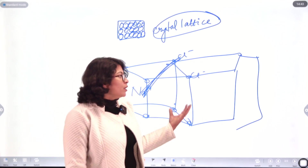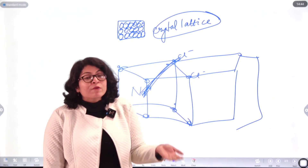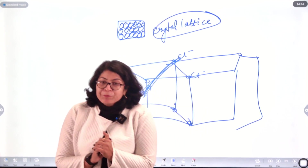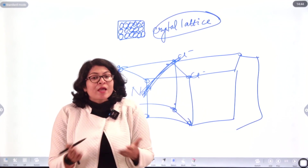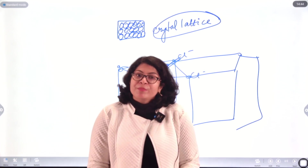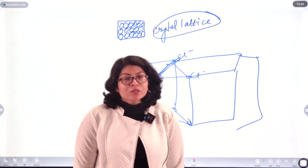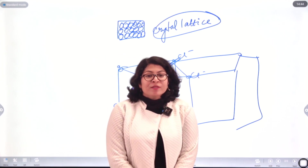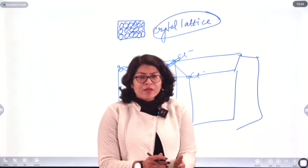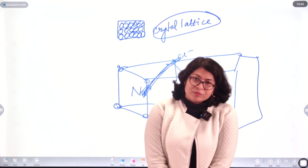So here is what we understood in this video: in case of solids, one possible type of bonding is ionic bonding, which arises when positive and negative ions are present in closer proximity. In the next video, we will be taking up covalent bonding and other kinds of bonding. That's all — thank you.